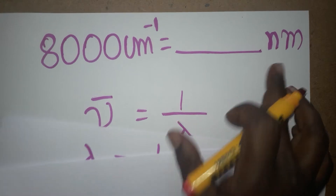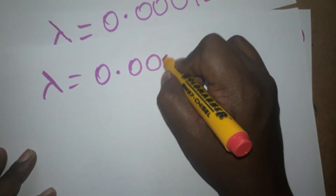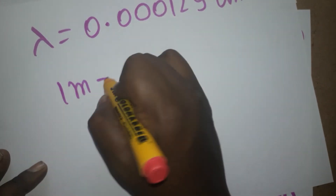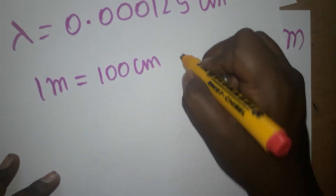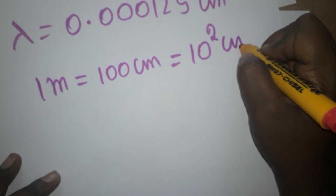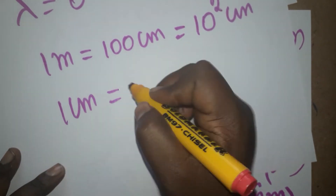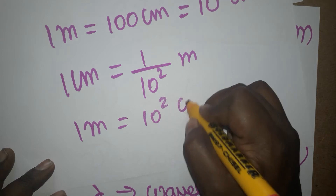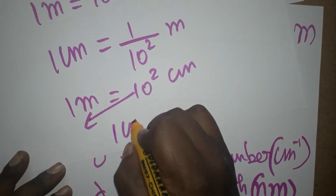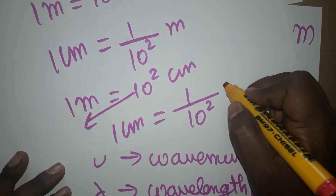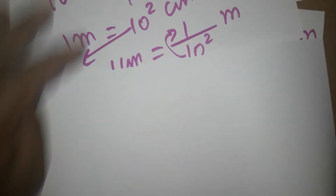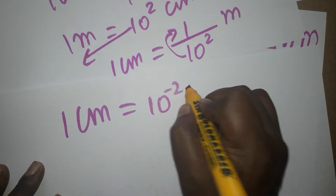Our goal is to convert centimeter to nanometer. We got wavelength = 0.000125 centimeter (cm⁺¹). Now, 1 meter is equal to 100 centimeters, which is 10² centimeters. So 1 centimeter equals 1 divided by 10² meter. Bringing 10² from denominator to numerator gives 10⁻², so 1 centimeter equals 10⁻² meter.